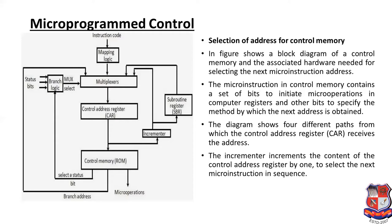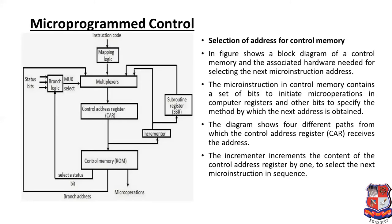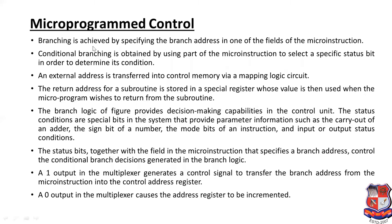Branching is achieved by specifying the address in one of the fields of the micro instruction. Conditional branching is obtained by using part of the micro operation field to select a specific status bit in order to determine its condition. An external address is transferred into the control memory via a mapping logic circuit.